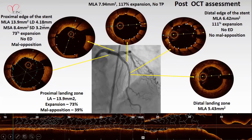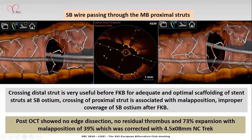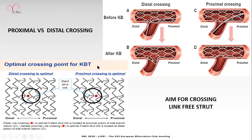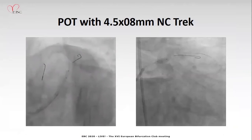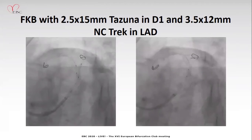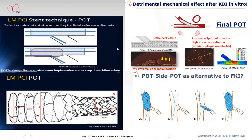A larger balloon was taken to better appose the proximal stent. The stent struts across the side branch ostium were analyzed. Always cross the distal strut to achieve the best optimization results — crossing proximally can lead to malapposition. OCT guidance was used to cross approximately distally based on whether the cell was link-free. Significant malapposition of approximately 39% was found proximally where vessel size was 4.2 mm. A 4.5 mm balloon was taken and expanded further. Kissing balloon inflation was performed to separate the struts across the side branch, though this can lead to a bottleneck deformity and stress on the plaque and vessel wall — always correct with POT afterward.